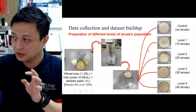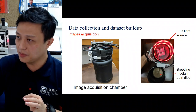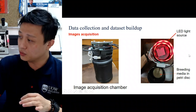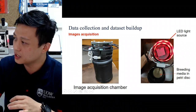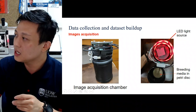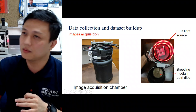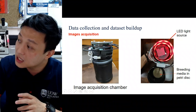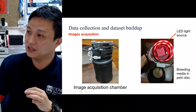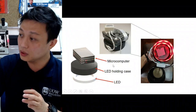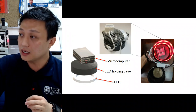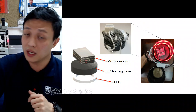We acquire images using an image acquisition chamber. The petri dish with the breeding substrate is placed inside. The device is constructed with an LED system that can apply white, blue, green, and red light, as well as infrared. The camera module is also built in. The device is made from a Raspberry Pi microcomputer with an 8-megapixel camera module using a Sony sensor.